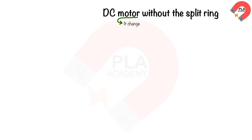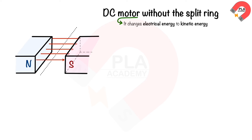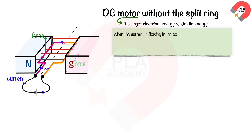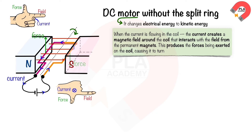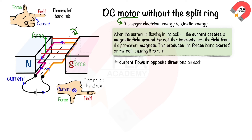The DC motor without split ring commutator: it converts electrical energy to kinetic energy. The simple DC motor consists of a coil of wire free to rotate in a uniform magnetic field. When current flows in the coil at right angles to the permanent magnet's field, the resulting interaction produces forces on the coil causing it to turn. Using Fleming's left-hand rule, one side of the coil is pushed up and the other down, causing the coil to rotate.